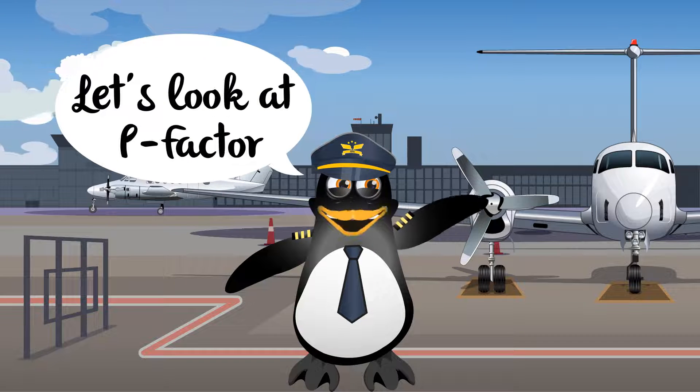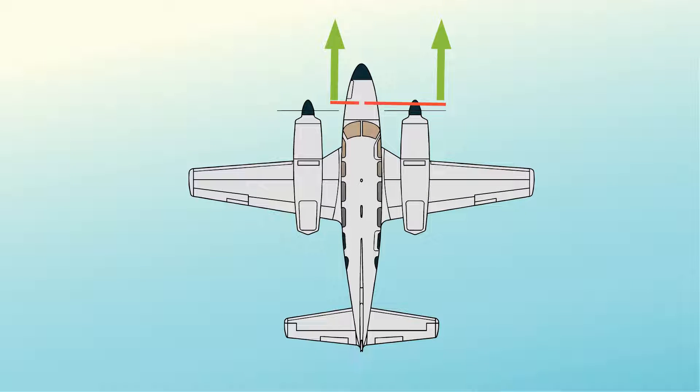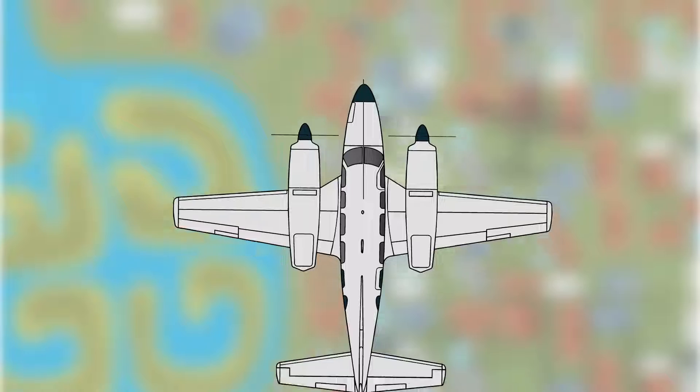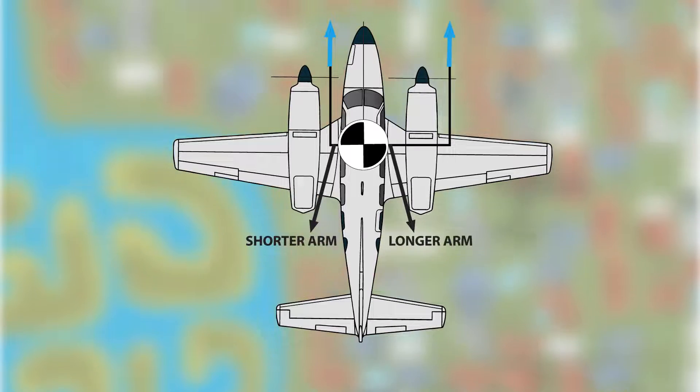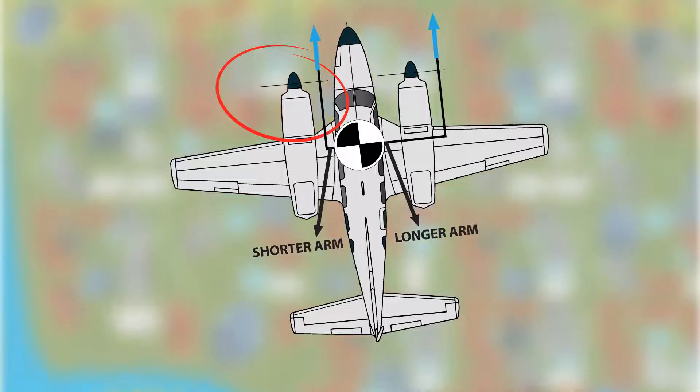Let's look at P-Factor. At low airspeeds and high angles of attack, the effective thrust centerline shifts to the right on each engine because the descending propeller blades produce more thrust than the ascending blades. The thrust on the right engine will have a longer arm from where the center of gravity is compared to the left engine, causing more of a yawing moment and requires the most rudder to counteract the adverse yaw.